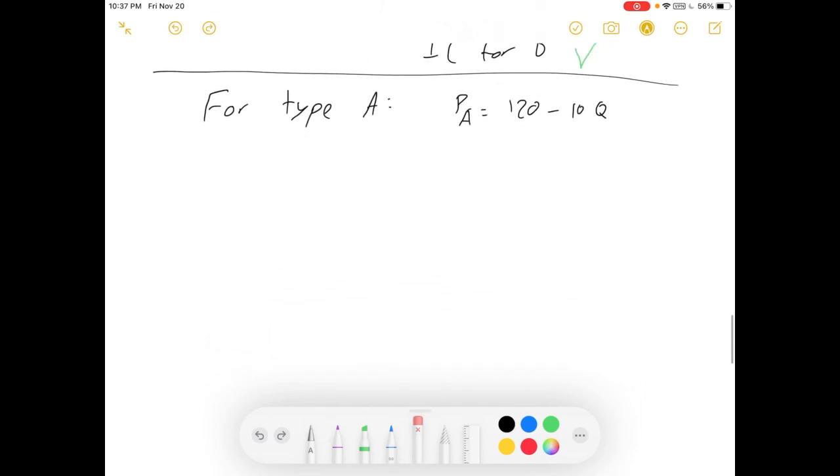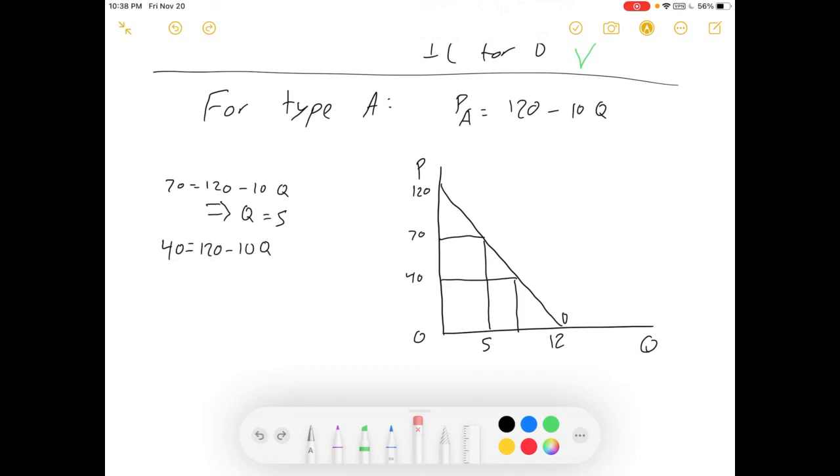Now, what about for type A with this higher demand curve? Well, let's draw it. Here's the price of 70. There's the price of 40. First thing, let's figure out this quantity. I'm just going to plug it into the demand curve. 70 equals 120 minus 10Q. It implies that Q equals 5. Now, let's check 40 and see if we get our discount or not within our demand curve. All right. So, I'm finding this Q now. 40 equals 120 minus 10Q. That means that Q is 8. Oh. Well, we have to get 10 in order to get the discount. So, let's see. Let's add that in there. Extend that 40 out to get 10.